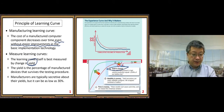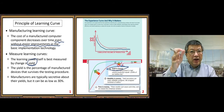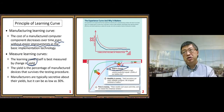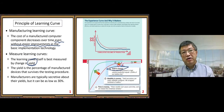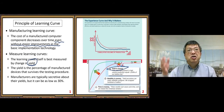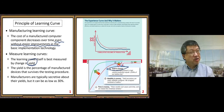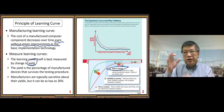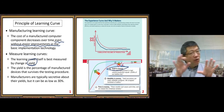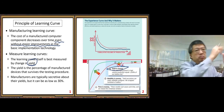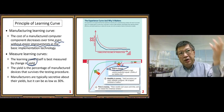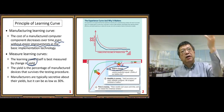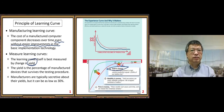Manufacturers are typically secretive about their yields because this number is top secret for manufacturing companies. If your competitor knows your yield number, they can set their strategy and try to beat you in different ways. So the yield number is highly secret.